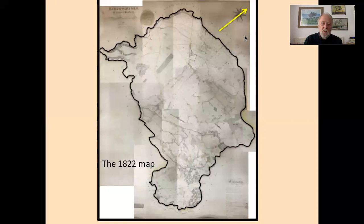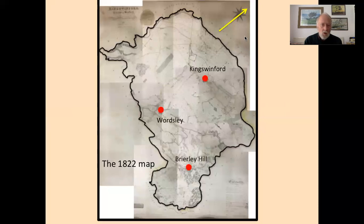North is to the top right, and on the maps that follow I'm going to show as red dots three townships within the parish: the township of King Swinford itself, the ancient industrial township of Wordsley, and the township of Brierley Hill. For slides where I show map extracts, I'll stick to the frame of reference used by the map itself with north to the top right. Any other maps I show will have north at the top as normally expected.